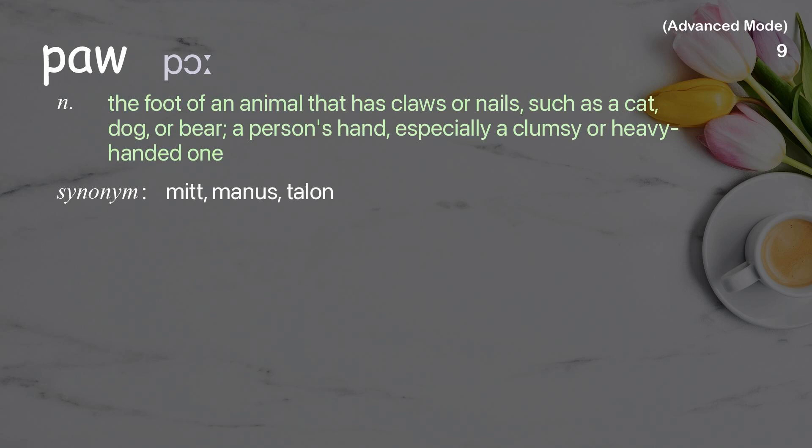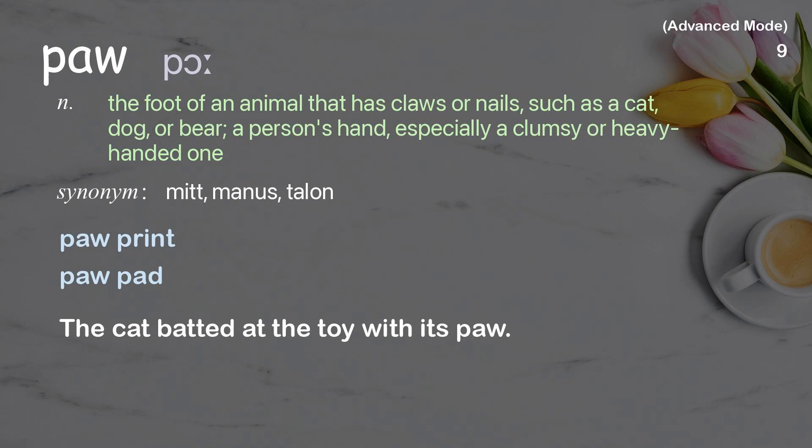Paw. The foot of an animal that has claws or nails, such as a cat, dog, or bear; also informally, a person's hand, especially a clumsy or heavy-handed one. Examples: paw print; paw pad. The cat batted at the toy with its paw.